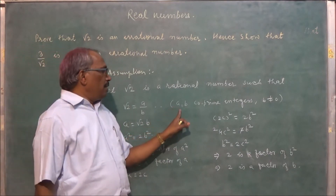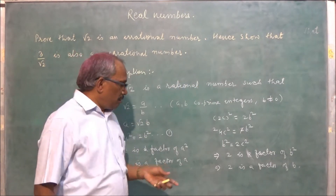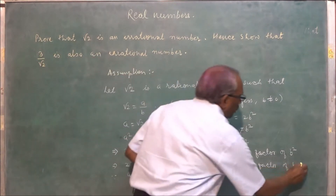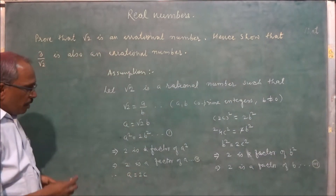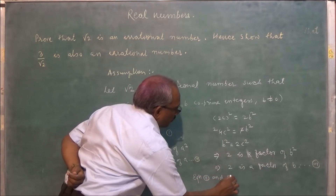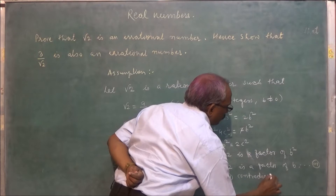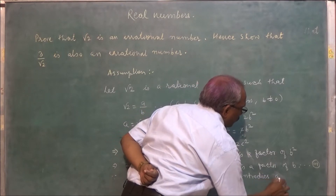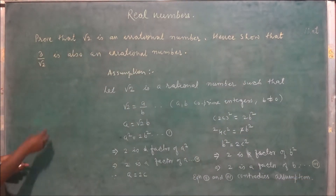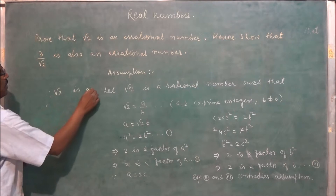But we considered a and b are co-prime integers, yet both are divisible by 2 — this is a contradiction. Therefore root 2 is an irrational number.